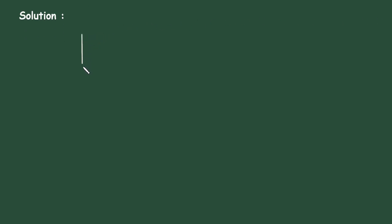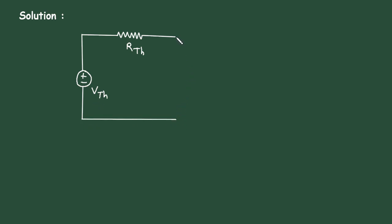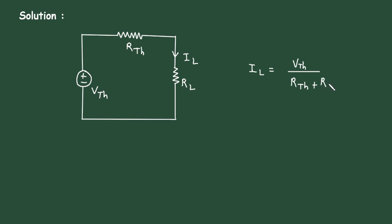Solution: in case of Thevenin's theorem, first of all we have to find the value of RTH and VTH — that is Thevenin's voltage VTH and Thevenin's resistance RTH. RTH, VTH, and load resistor RL, load current IL. Now IL is equal to VTH divided by RTH plus RL. This is the Thevenin's equivalent circuit.